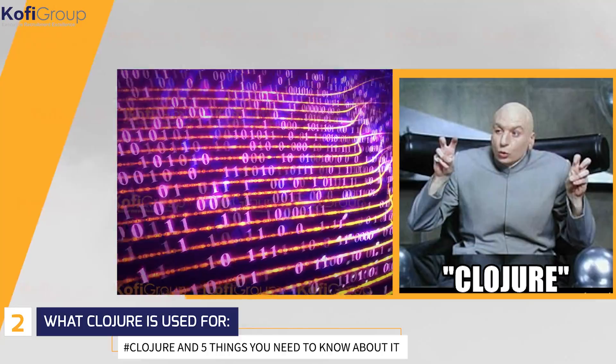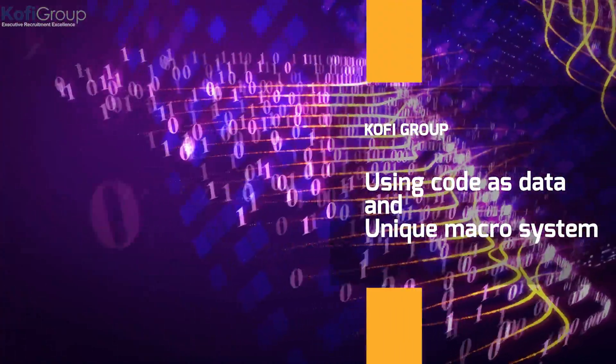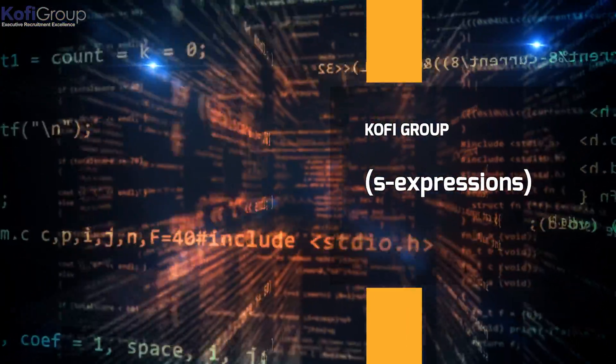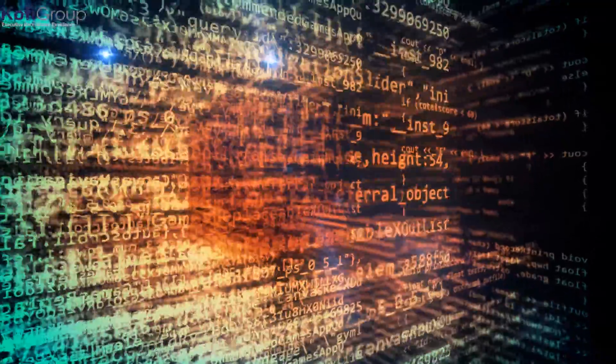Number two: what Clojure is used for. Many features of Lisp have filtered down into other programming languages, but there are two that still remain distinctly Lisp: using code as data, and a unique macro system. Clojure is a little different in that it extends the code-as-data system out beyond listed terms in parentheses, or S-expressions, and into maps and vectors. By doing this, both maps and vectors are now able to be used in the macro syntax and have literal reader representations.